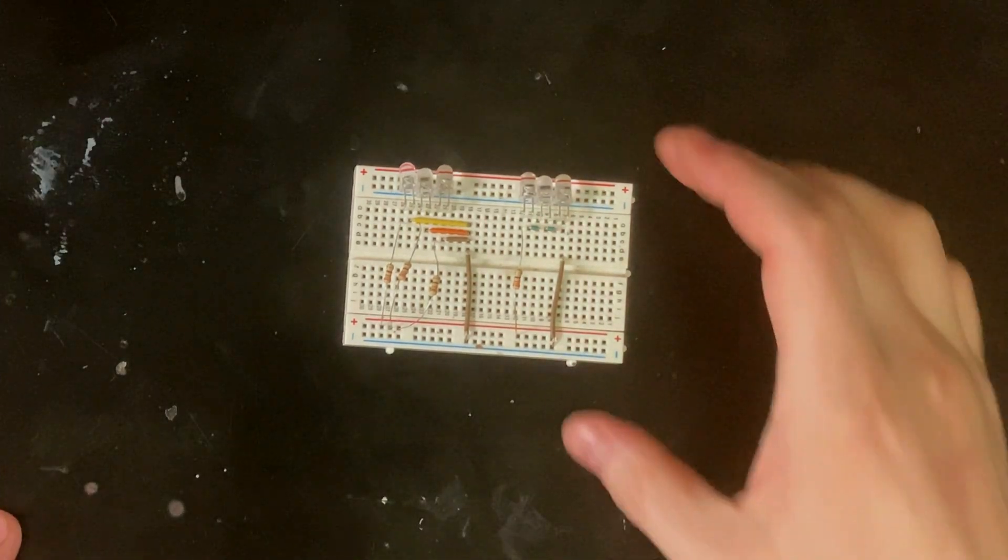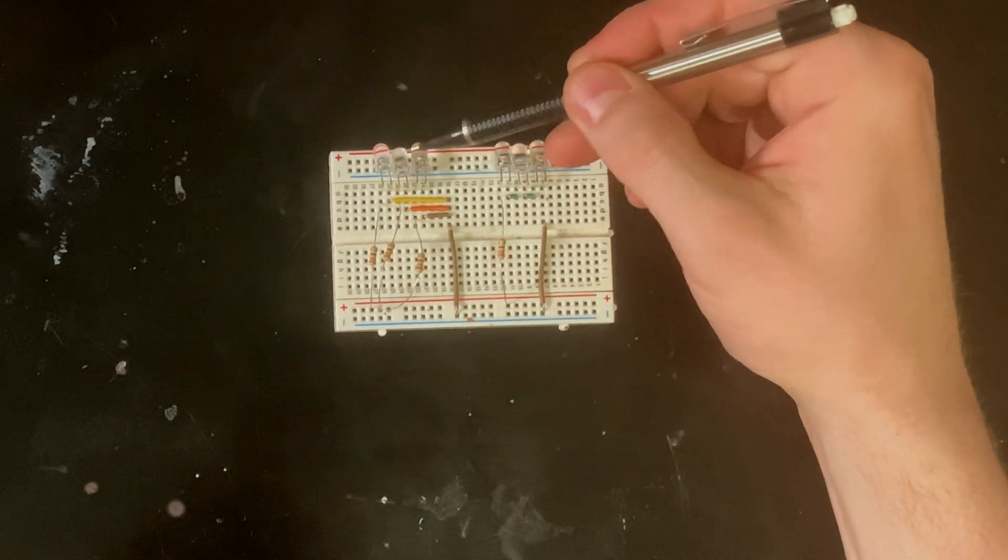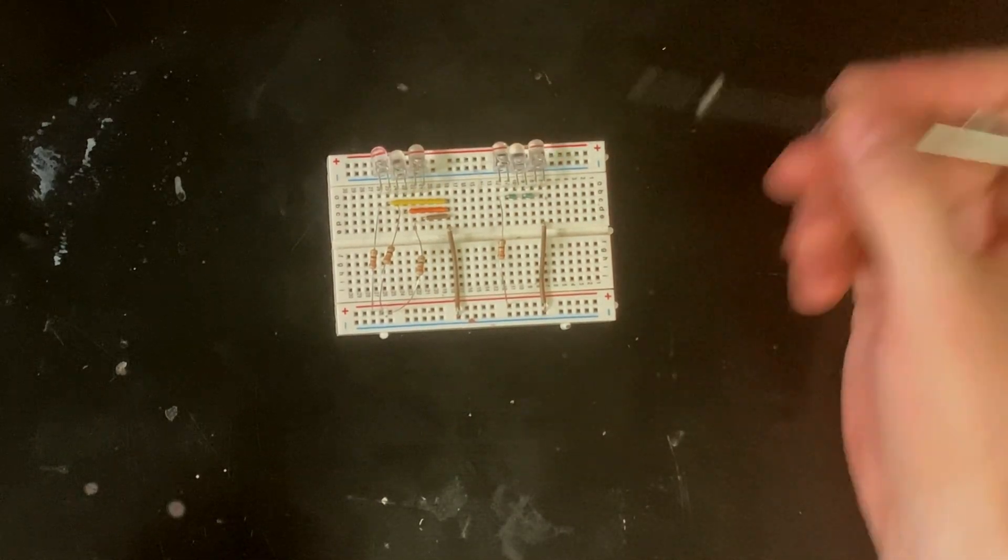So there's two ways to wire your LEDs. You can wire them in parallel, like these three here, or you can wire them in series, like these three here.